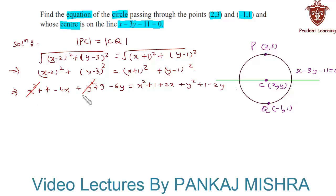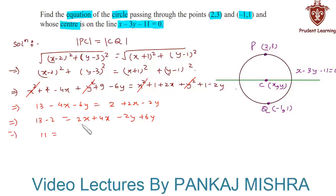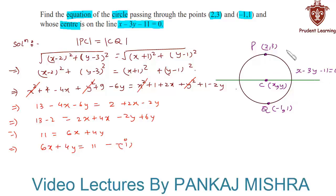We can cancel x² and y² on both sides. So we have 13 minus 4x minus 6y equals 2 plus 2x minus 2y. Rearranging: 13 minus 2 equals 2x plus 4x minus 2y plus 6y. This gives us 11 equals 6x plus 4y, so 6x plus 4y equals 11 — call it Equation 1. The line through the center gives x minus 3y equals 11 — call it Equation 2.